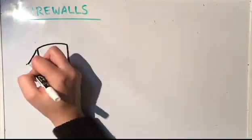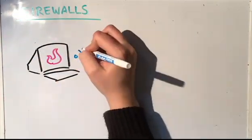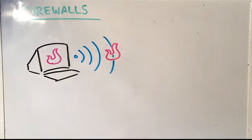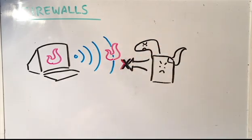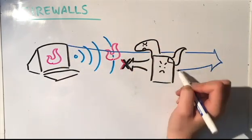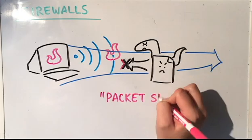Firewalls are either installed within your computer system or at the gateway to your network. They are designed to block unauthorized access while still allowing you to communicate outward. They use a method called packet sifting to look through all incoming data for any harmful viruses.